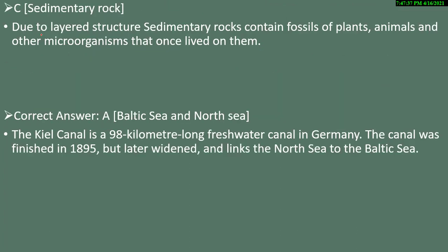Sedimentary rocks have a layered structure in which fossils of plants, animals, and other microorganisms are preserved. The Kiel Canal — also known as Kaiser Wilhelm Canal — is a freshwater canal, 98 kilometres long, found in Germany. It was completed in 1895 and links the North Sea and Baltic Sea.